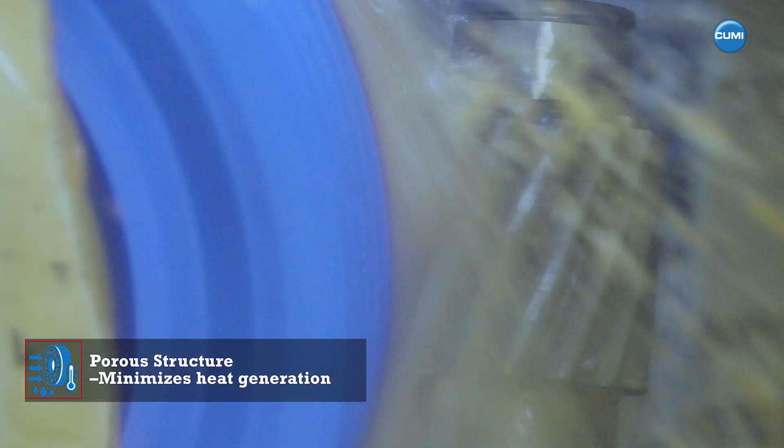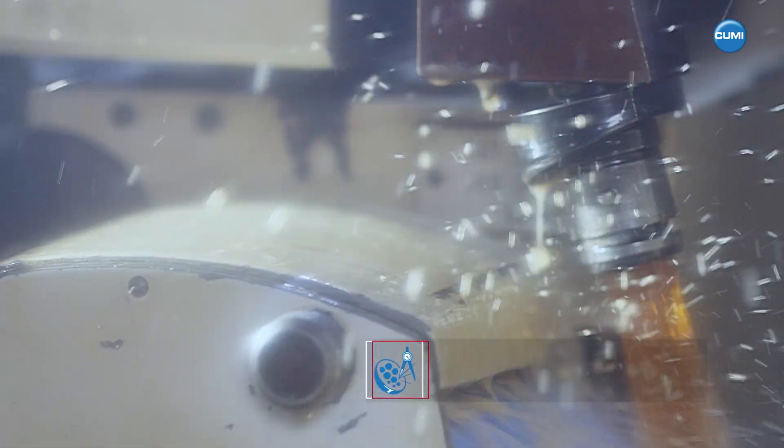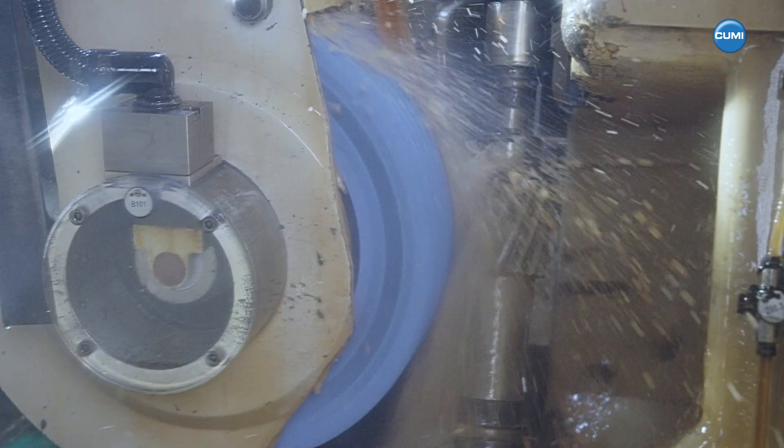Porous structure enables integrated cooling ability that minimizes heat generation. Precision vitrified bonds ensure structural rigidity and consistent grinding performance.